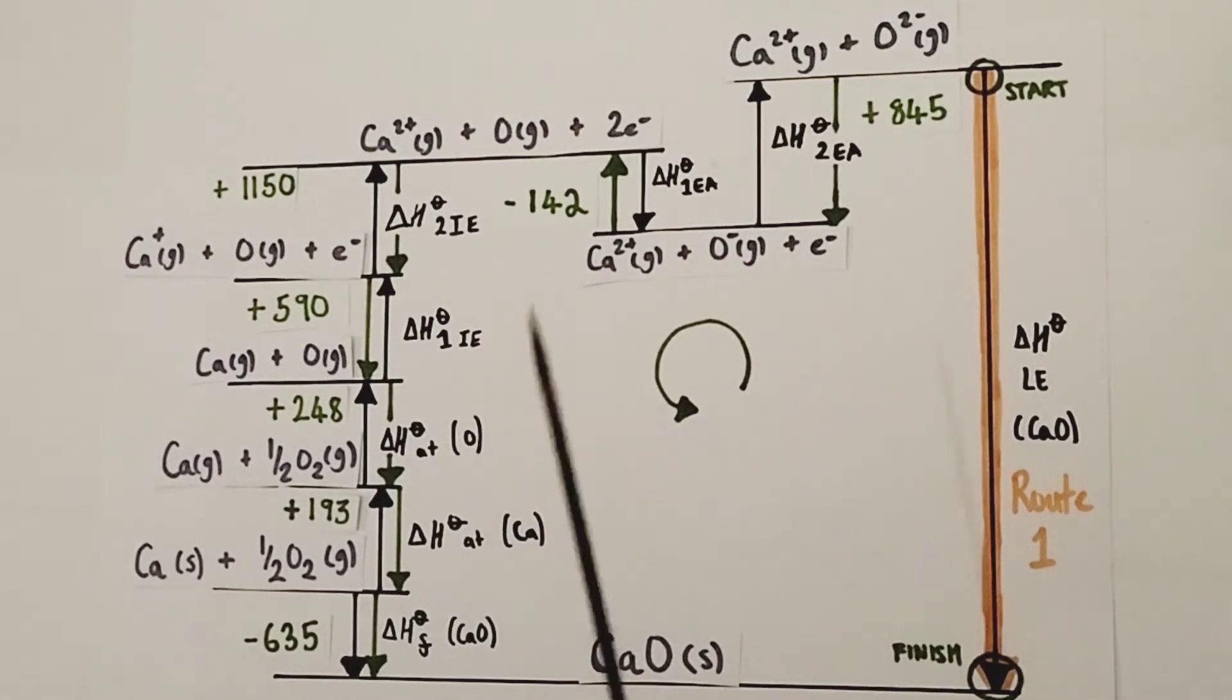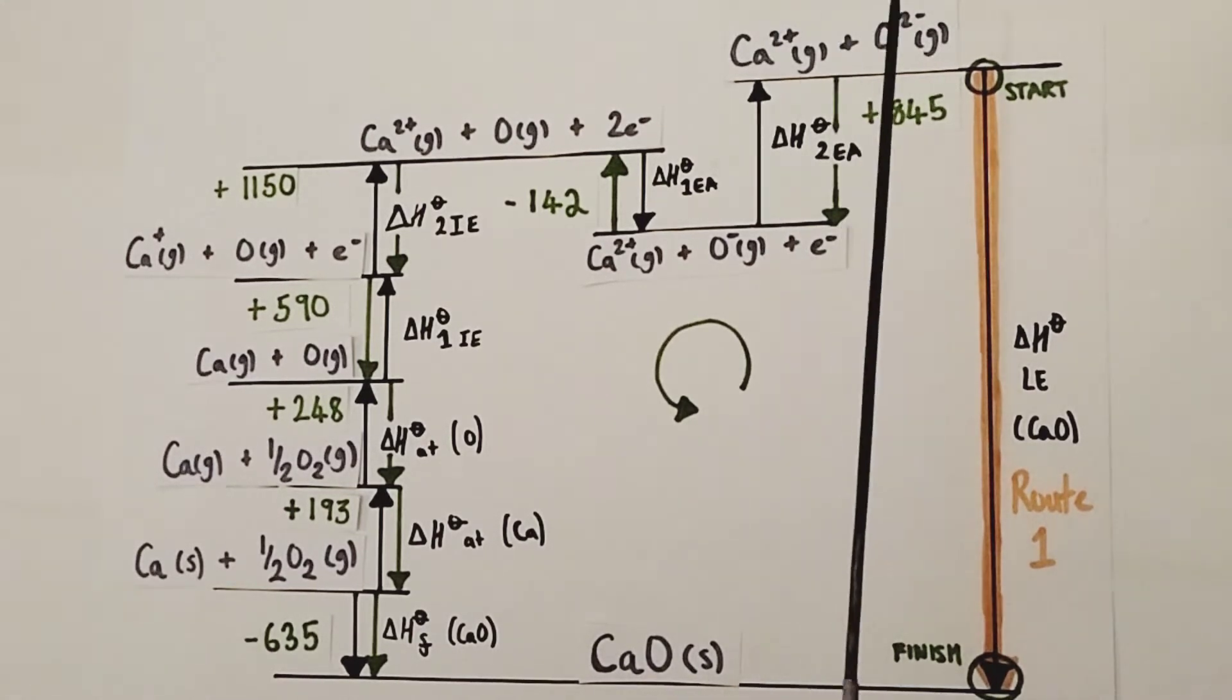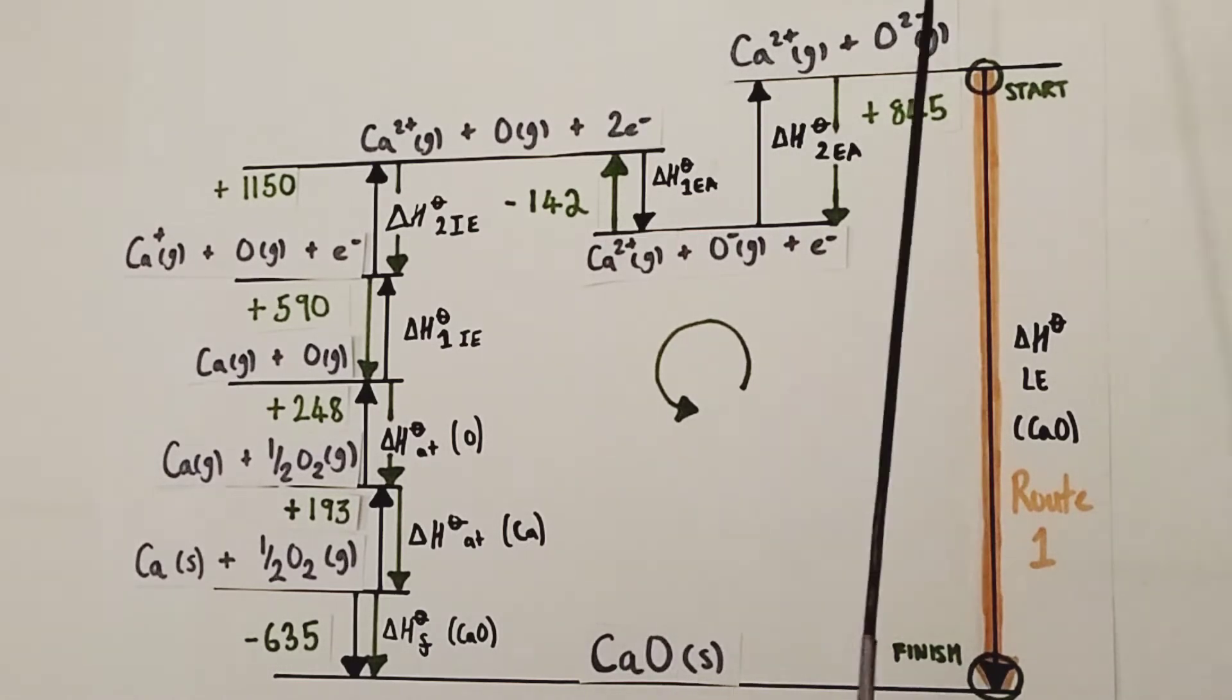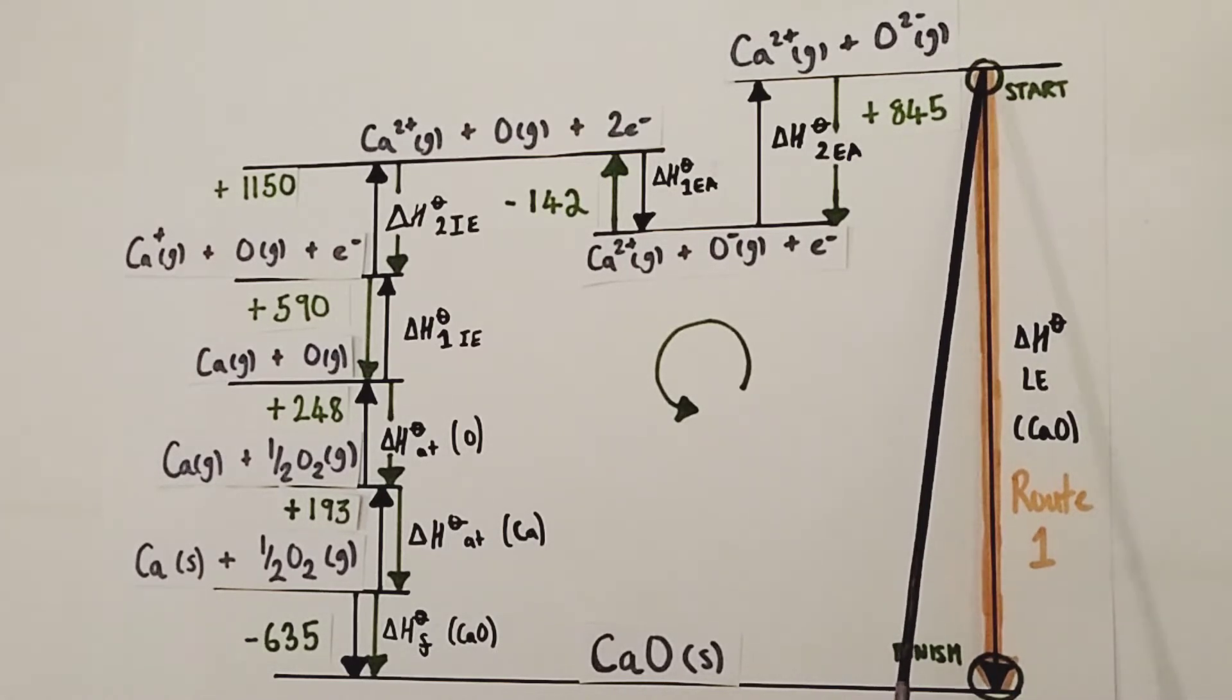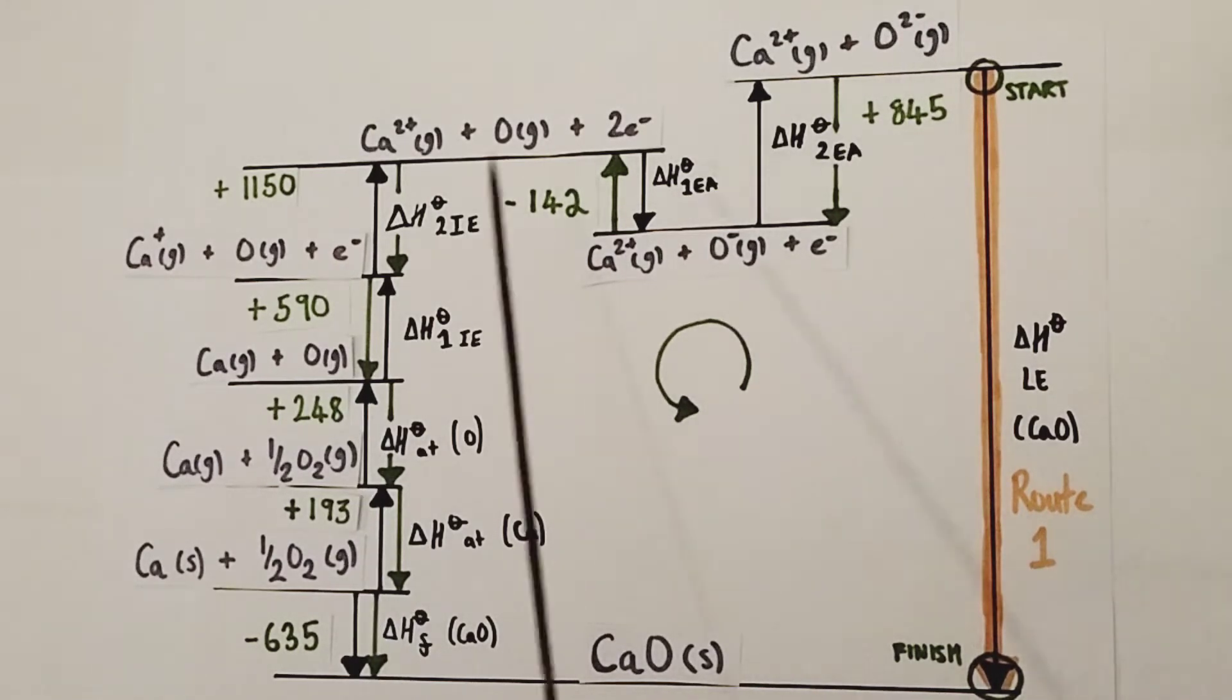Just a little note before we start. Some of the arrows of the route we're going to take are going against the direction of the original energetics of the enthalpy change in question. That means we're doing the negative of that process, or effectively the opposite energetics of that process. So the foolproof method is as follows: put a start around the tail of the arrow you are looking for, and a finish circle around the head of the arrow you're looking for. You're going to start your journey working backwards from the start of your arrow around the cycle, finishing at the head of the arrow, which is your finishing point. So we're going to work our way around this cycle in this anti-clockwise direction from start to finish and find out the sum of all those enthalpy changes.